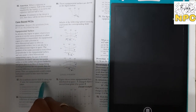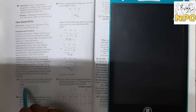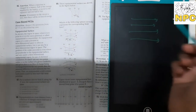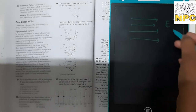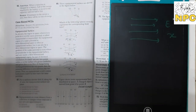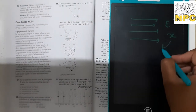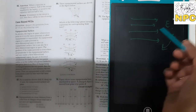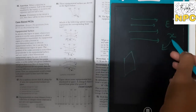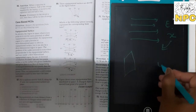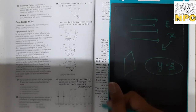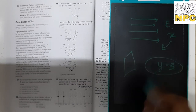For a uniform electric field E along the X-axis, the equipotential surfaces are planes. The uniform electric field is along the X-axis, and we need to determine the orientation of the equipotential planes — whether they are parallel or perpendicular to the X-axis and how to find this.